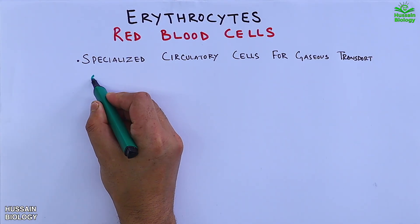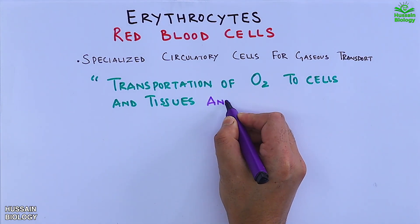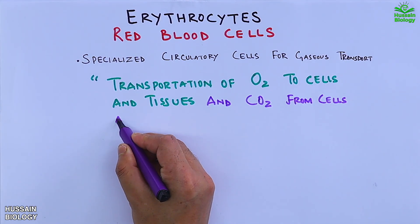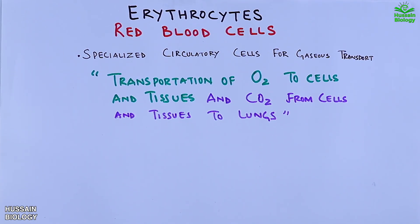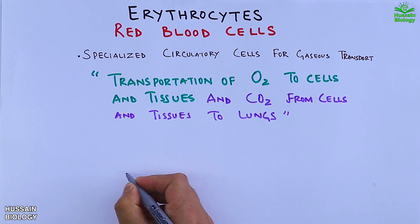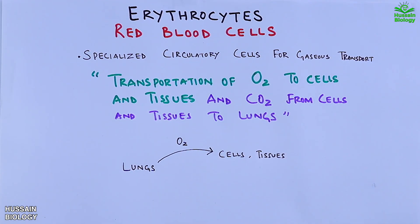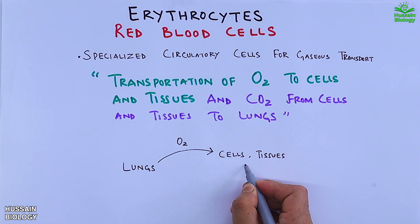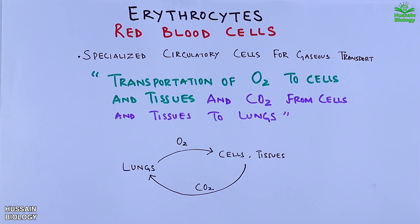Erythrocytes mediate transportation of oxygen to cells and tissues, and then carbon dioxide from cells and tissues to the lungs. A simple representation would be: lungs delivering oxygen to cells and tissues by erythrocytes, and then these erythrocytes take CO2 from cells and tissues to deliver it to the lungs.